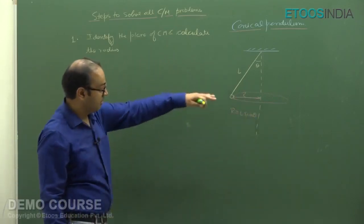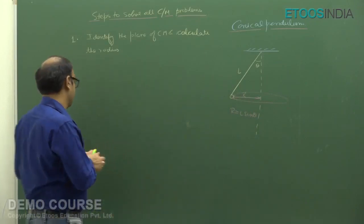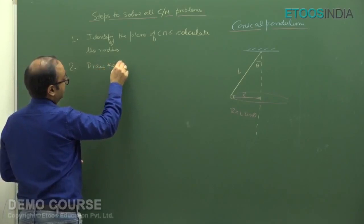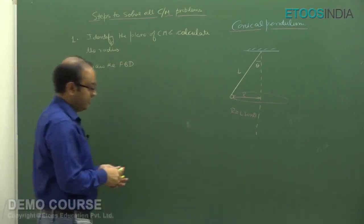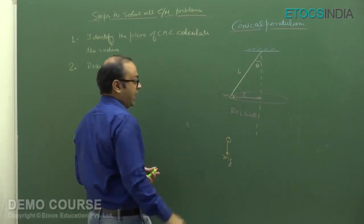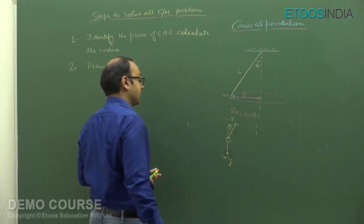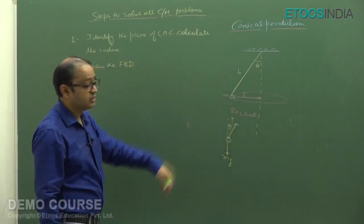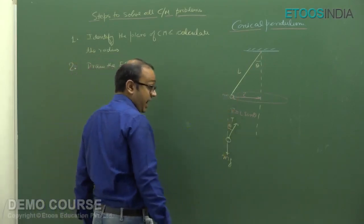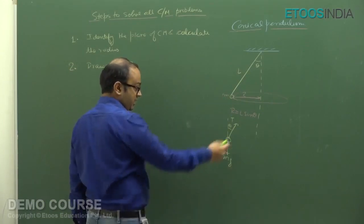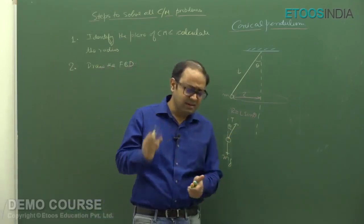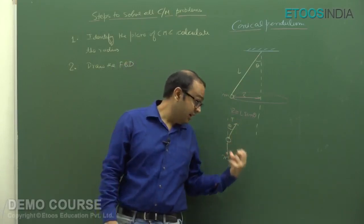The second step is to draw the free body diagram. If I draw the FBD of this particle of mass M, there is a force downwards which is Mg and a force tension T at angle theta. Now, should I write Mv²/R leftwards or rightwards? There is no such force as Mv²/R. What I'm writing in the free body diagram are all the real forces.